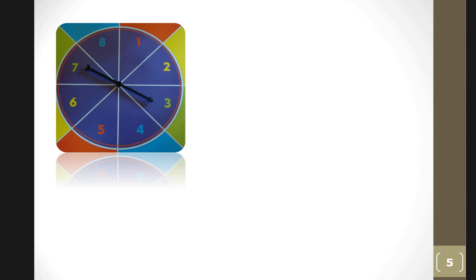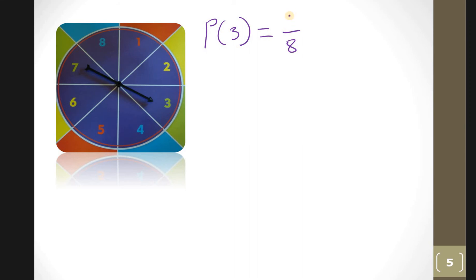If this spinner is spun once, what is the probability it points to a three? There are eight elements total — one through eight. There is only one three, so the probability is one out of eight.